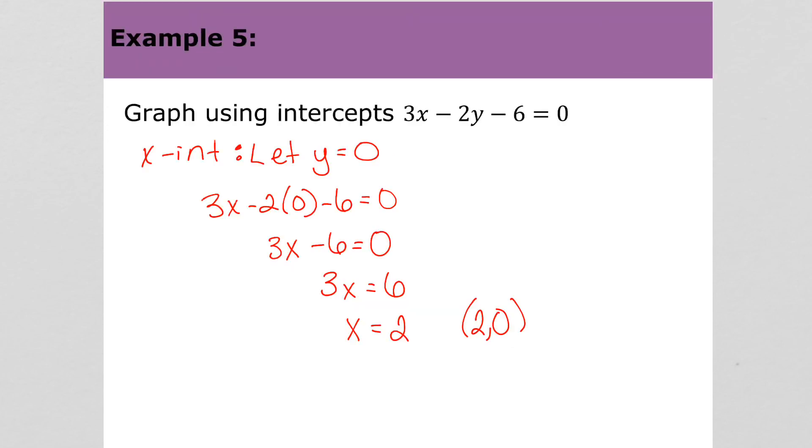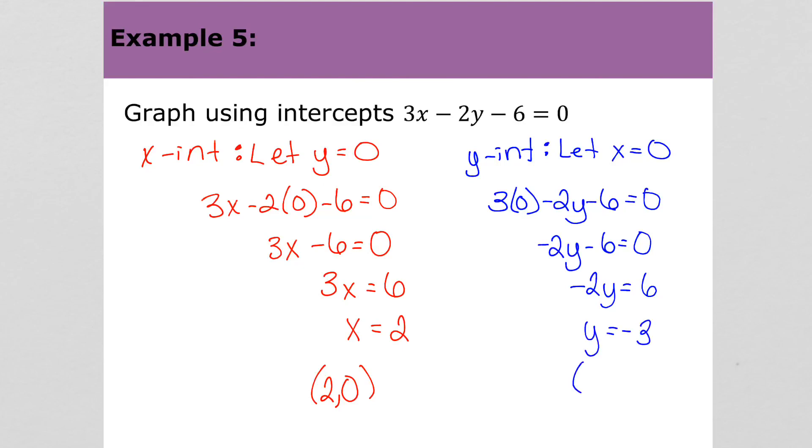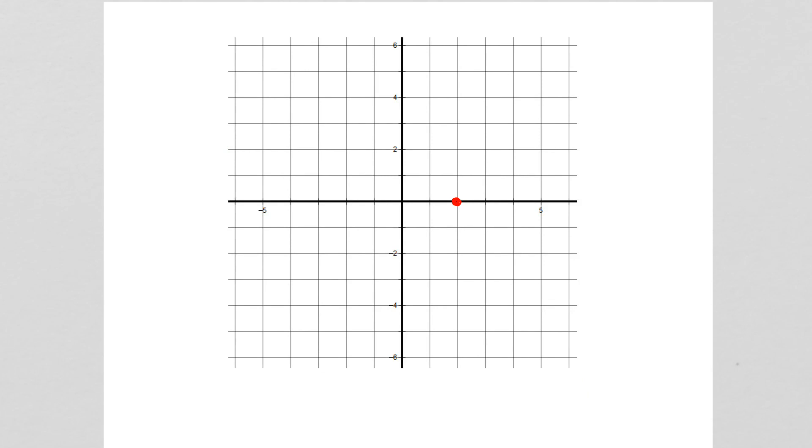Then we're asked to find the y-intercept. So to find the y-intercept, remember, let x be 0. So we've got 3 times 0 minus 2y minus 6 equals 0. 3 times 0 is just 0, so we've got negative 2y minus 6. Add 6 to both sides and y is negative 3. So the point for the y-intercept is (0, negative 3). There it is. And so our line looks like this.